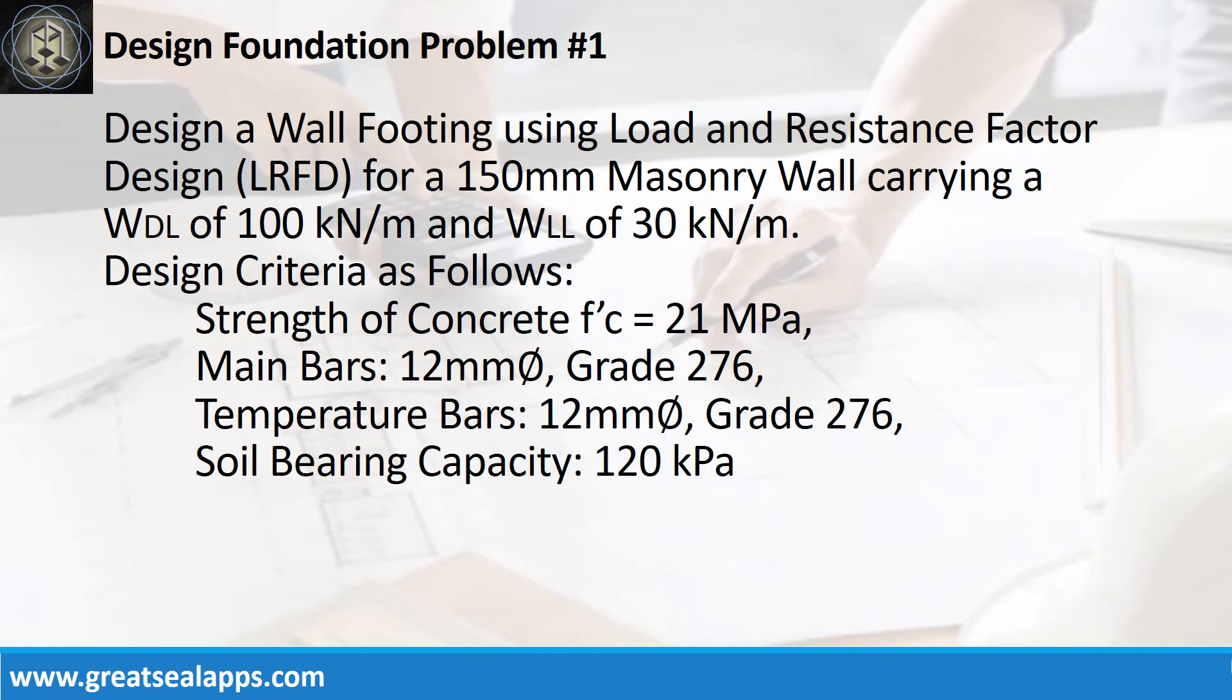Design a wall footing using load and resistance factor design for a 150mm masonry wall carrying a uniform dead load of 100kN per meter and uniform live load of 30kN per meter. Design criteria as follows.